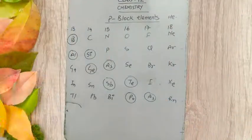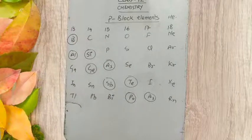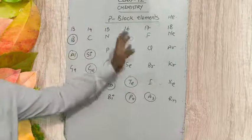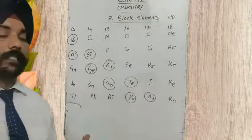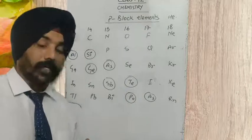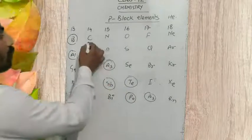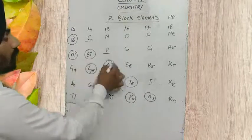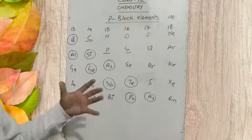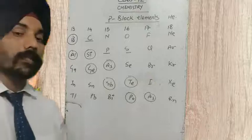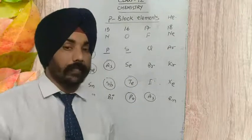Non-metals make oxides which are acidic in nature or neutral in nature. For example, the oxides of carbon, phosphorus, and sulfur — these kinds of oxides are acidic in nature. When we add these oxides into water, they form acids. So they are acidic in nature, or they are neutral in nature.